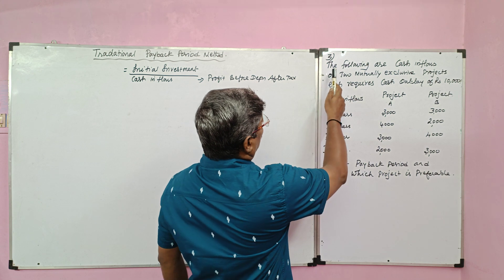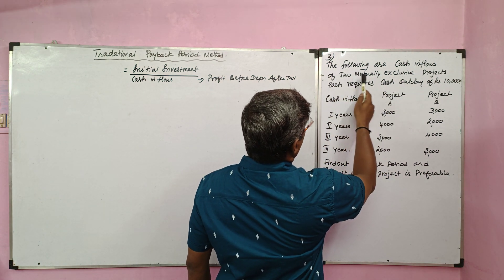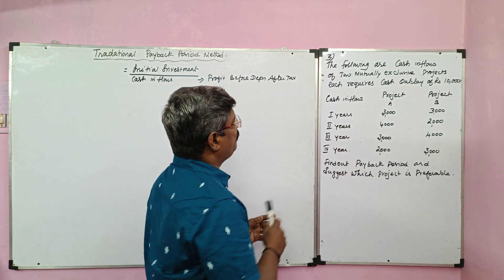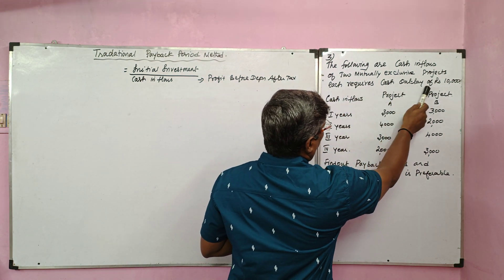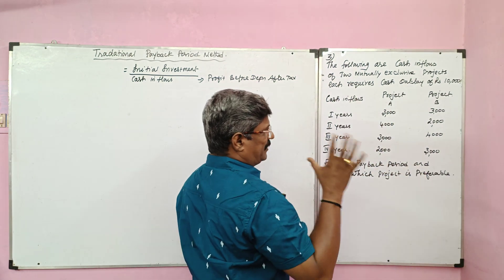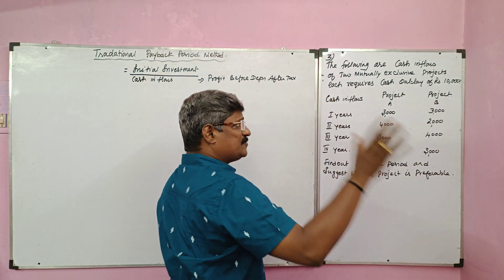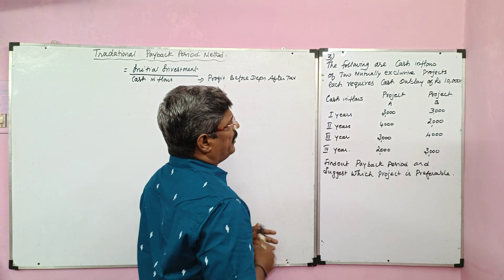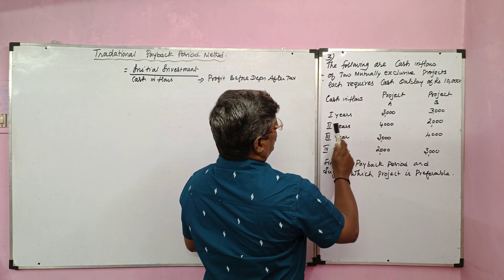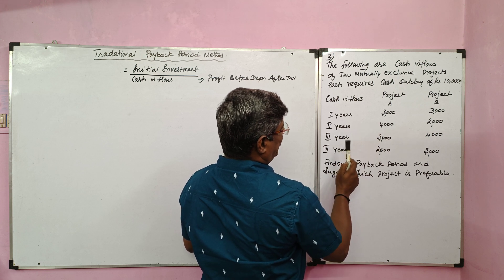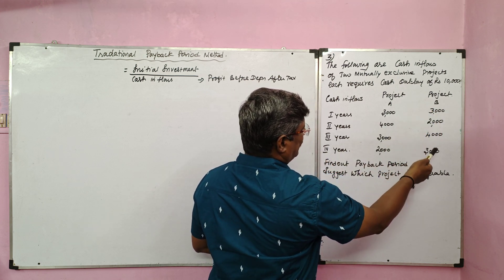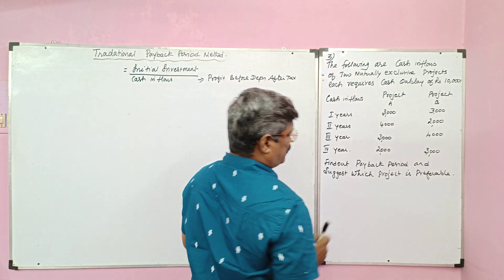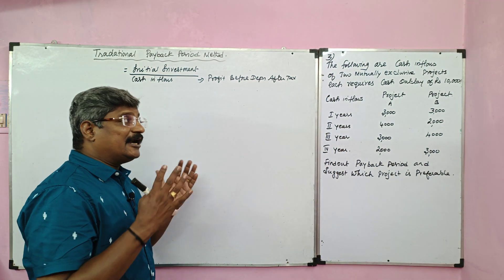Now the third sum. The following are cash inflows of two mutually exclusive projects — that is two projects. Each requires a cash outlay of Rs. 10,000. So project A investment is 10,000 and project B investment is 10,000. Find out the payback period and suggest which project is preferable. Since no tax or depreciation is mentioned, we ignore depreciation.